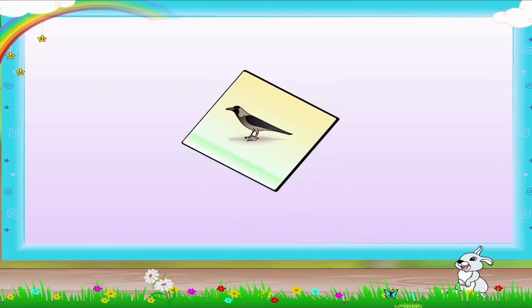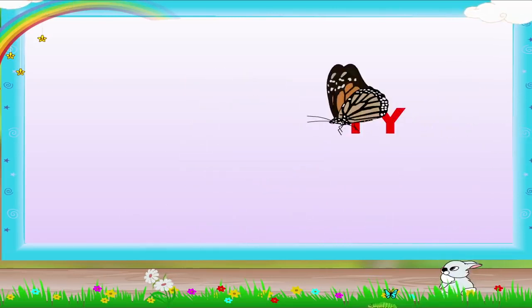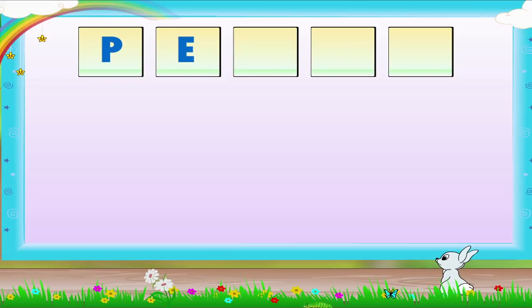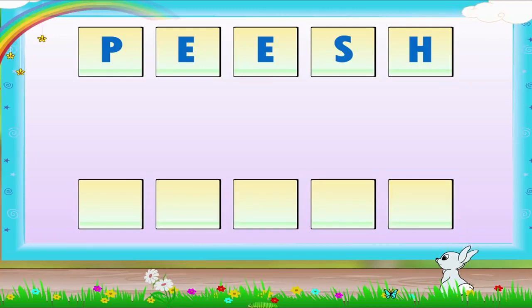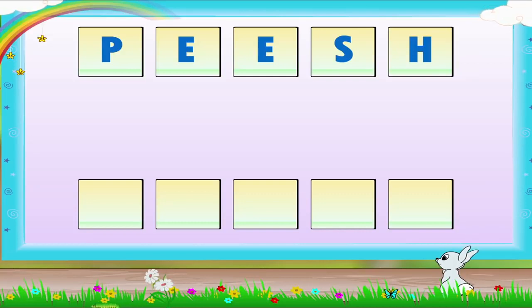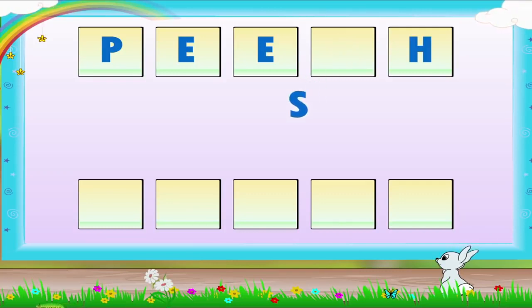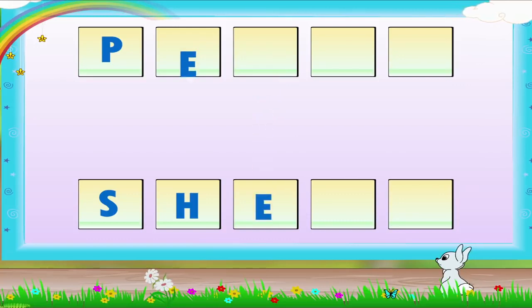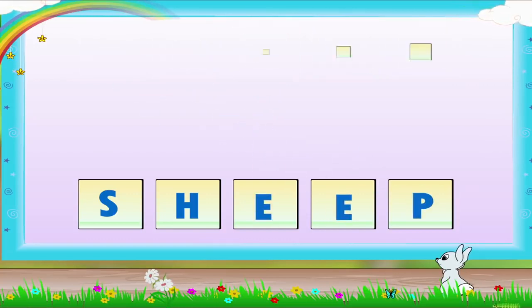Wasn't that easy, Rainbow? Let us do another activity. Here are some letters. You will have to arrange the letters to make meaningful words. I will not give you pictures now. The first jumbled letters are P, E, E, S, H. Which word did you get? It is S, H, E, E, P. Sheep.